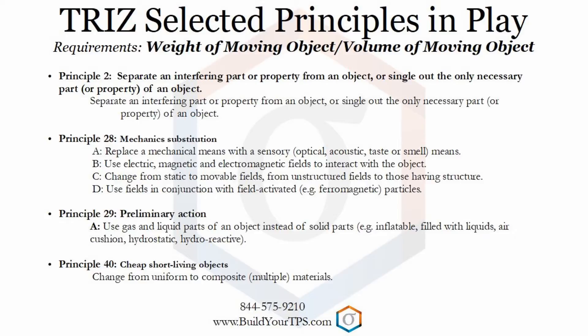Principle 28: Mechanic Substitution. This principle has four categories. Subcategory A is replacing mechanical means with sensory means — for example, adding odor to a gas instead of purchasing a gas sensor, or replacing a mechanical spring with an electrical spring. Subcategory B: use electric, magnetic, and electromagnetic fields to interact with the object. This could be used to mitigate the weight of a moving object — you don't actually decrease the weight, but you decrease the effective weight.